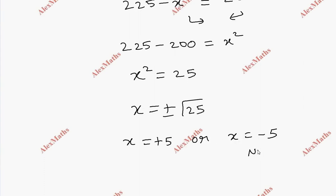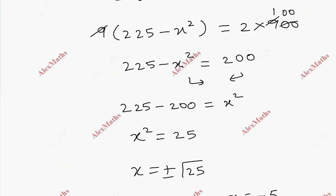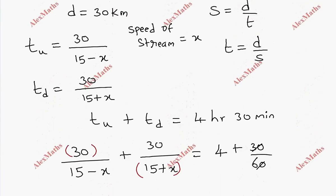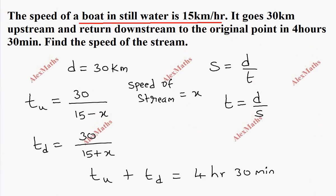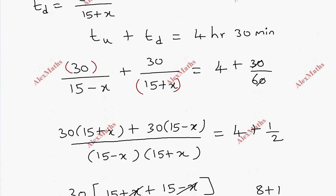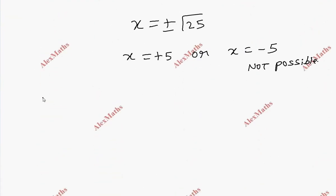Speed being negative is not possible. Therefore, speed of stream, speed of stream is 5 km per hour. So x value is clear, therefore speed of stream, x is equal to 5 km per hour.